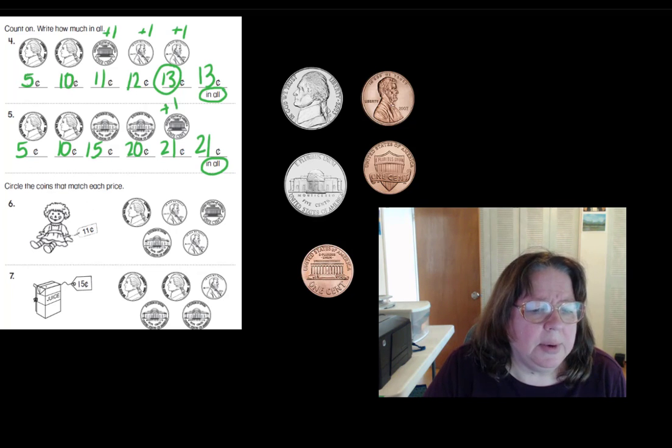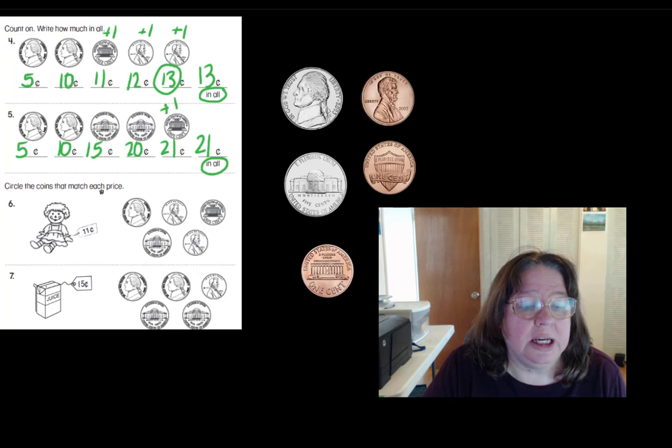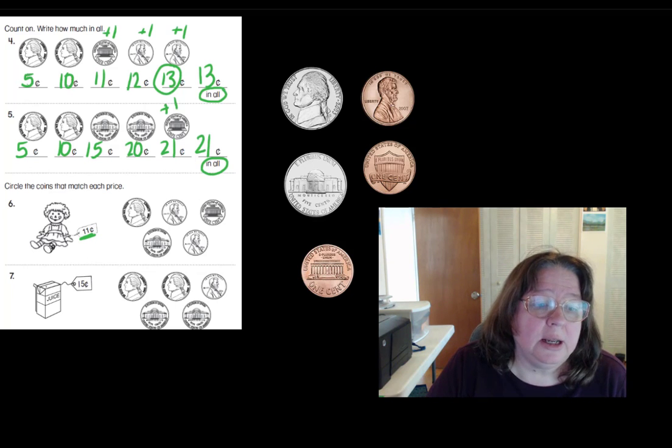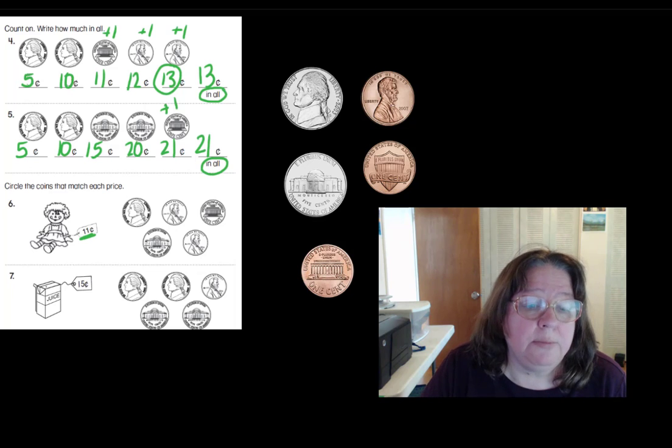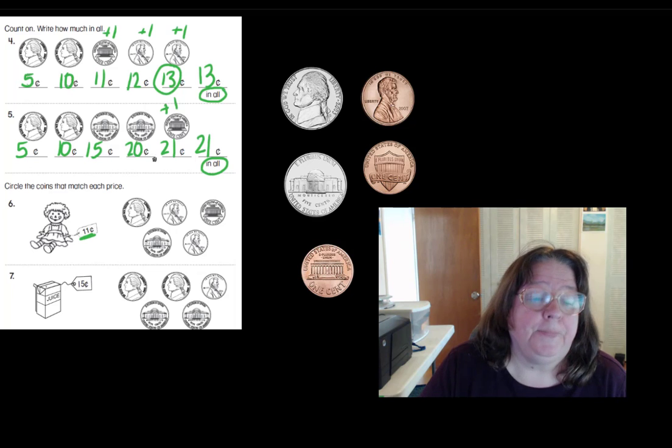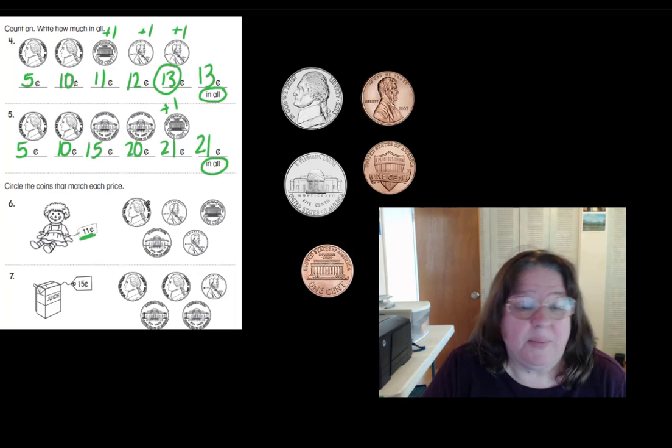Let's look and see what we have down here. It says circle the coins that match each price. So it looks like there's a little toy there, and the price is eleven cents. When we have a group of coins, and we're trying to come up with enough to buy something, or to match the price, start with the biggest coin. Ready? Oh, the biggest coin here is nickel. So, let's see. This is five.